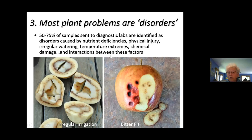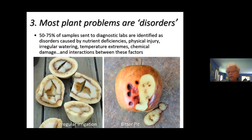There are also interactions between these factors. That terrible-looking bitter pit on apples is a calcium deficiency in the fruit. Extreme hot weather and not watering the trees worsens this because trees can't get calcium from the soil if the soil is dry. And if you're over-fertilizing with nitrogen so the fruit grows really fast, the tree can't deliver enough calcium to the fruit cells fast enough. You can see how it interacts with the way you're taking care of your plants.